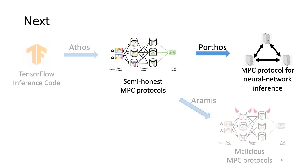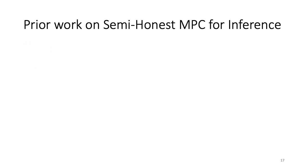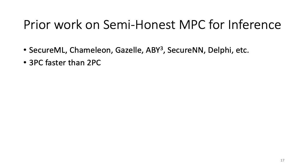Next, we will talk about Porthos, which is the three-party protocol geared towards neural network inference tasks. Like I mentioned earlier, there have been many prior works on using MPC for the purpose of secure inference. This includes SecureML, Chameleon, Gazelle, ABY3, SecureNN, Delphi, etc. These works fall in either the 2PC or the 3PC category, where the former refers to two parties involved in the computation and similarly three parties for the latter case. It is well known in the crypto community that 3PC protocols perform better than the 2PC ones by at least an order of magnitude and this is why we only focus on 3PC in this work.